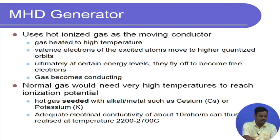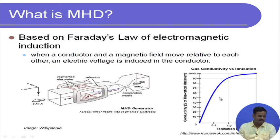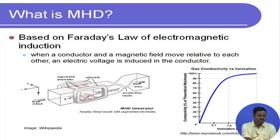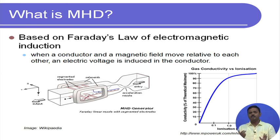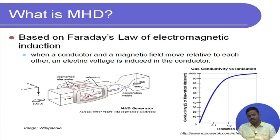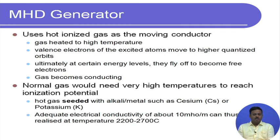A graph shows gas conductivity versus ionization: with just one percent seeding, approximately ninety percent of the maximum conductivity is achieved. So a very small amount of seed particles is required. However, these seed particles are hazardous, so it is very important to capture them from the ionized gas once we have extracted the electrical energy.